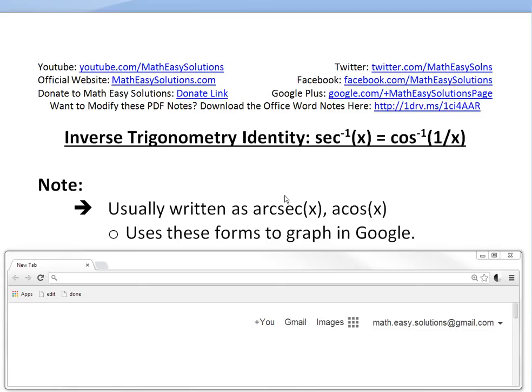And just before I get to the proof, I want to point out that this inverse secant can also be written as arc secant or a secant of x. These mean the same thing, and you can use these forms to graph it in Google.